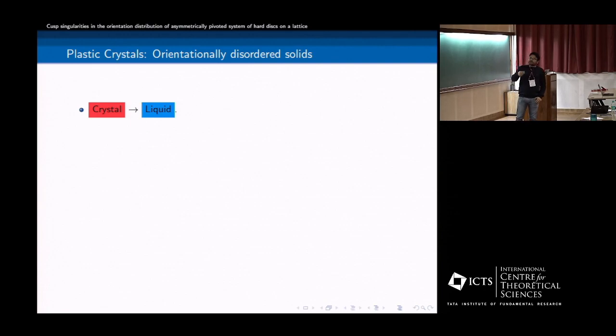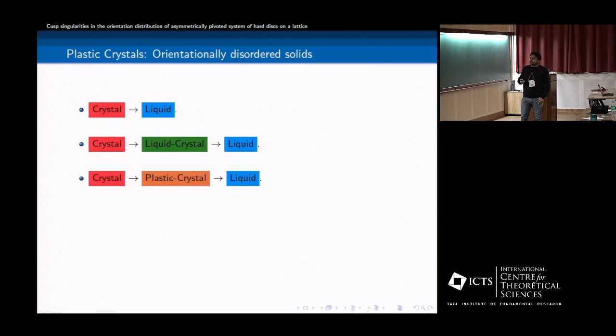So you can have one step transition. What can happen? There can be an intervening phase between this crystal and liquid, so it is called a liquid crystal and it's much studied in physics. Here the translation symmetry is recovered, but rotation symmetry is still broken in the liquid crystal and then you can get a liquid phase. But you can have another phase of matter in between, an intervening phase, it's called plastic crystals. So here the translation symmetry is still broken, but the orientation symmetry is there. So orientation order is not there, it's orientation disordered.